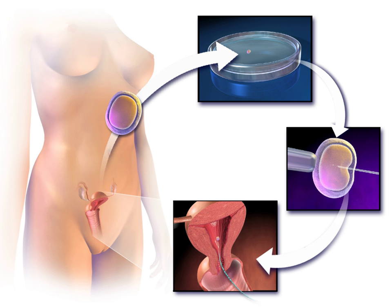ICSI is also sometimes employed when donor sperm is used. Autologous endometrial co-culture is a possible treatment for patients who have failed previous IVF attempts or who have poor embryo quality; the patient's fertilized eggs are placed on top of a layer of cells from the patient's own uterine lining, creating a more natural environment for embryo development. In zygote intrafallopian transfer (ZIFT), egg cells are removed from the woman's ovaries, fertilized in the laboratory, and the resulting zygote is then placed into the fallopian tube.